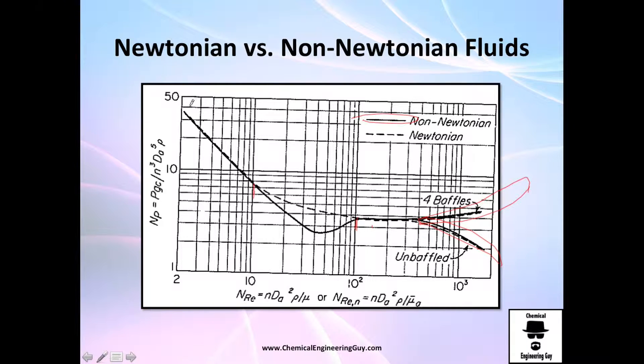The Newtonian one, classic, is almost a very straightforward line. Actually, the Newtonian versus the non-Newtonian is pretty similar when you have a baffle because there is no stress, there is no shear stress, there is no differences.